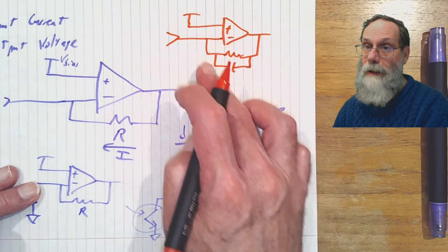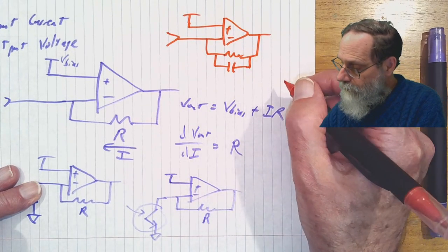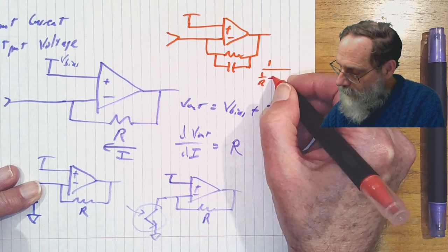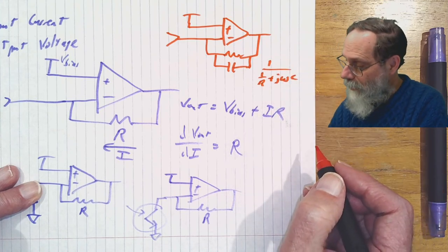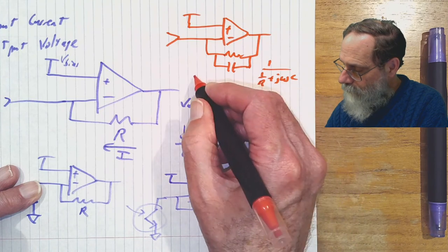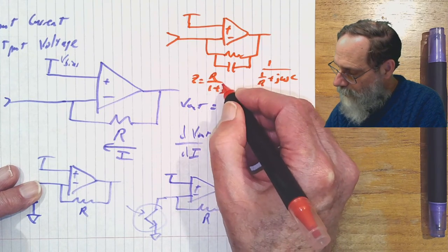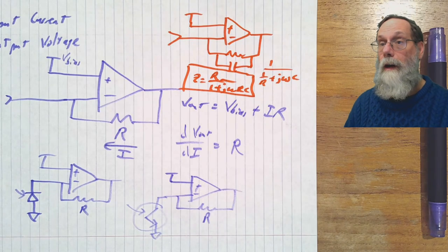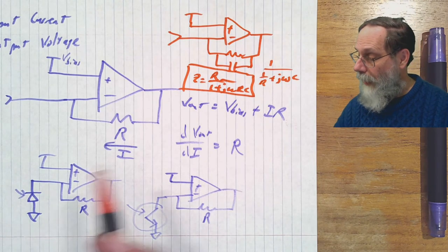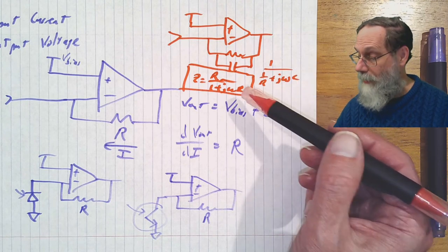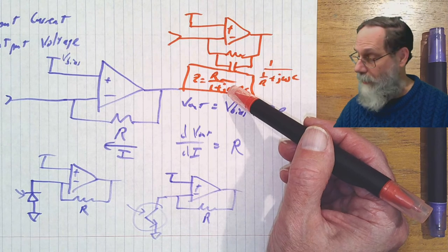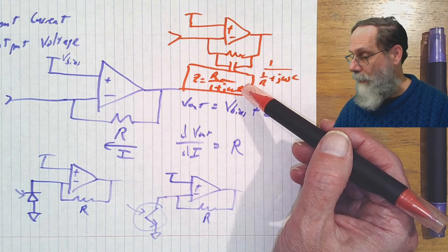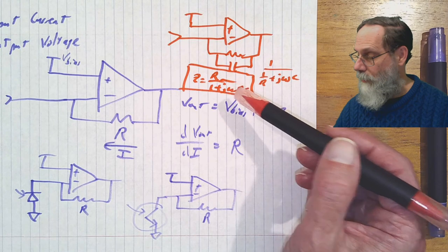What is the impedance of this thing? It's 1 over (1 over r plus j omega c), or multiplying top and bottom by r, r over (1 plus j omega rc). So that's the complex gain of this amplifier. You can check that the units are correct, because j omega rc, omega is in radians per second, rc is a time constant in seconds, so those cancel and you just get unitless radians. You have r over 1 plus something unitless, which is just in ohms, so the units are correct.